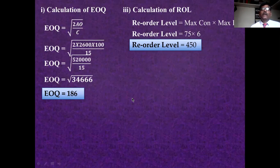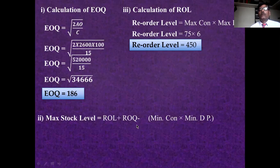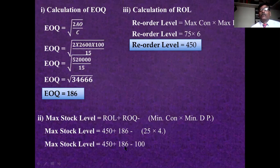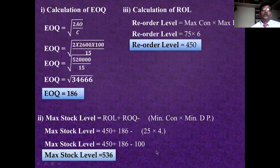Maximum stock level = ROL + ROQ − (minimum consumption × minimum delivery time) = 450 + 186 − (25 × 4) = 450 + 186 − 100 = 536 units. So 536 units is the maximum stock level.